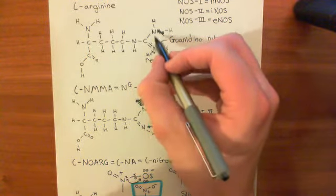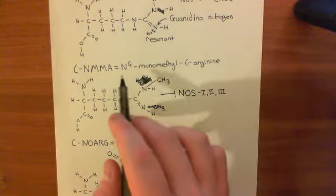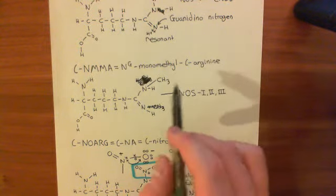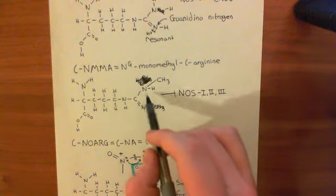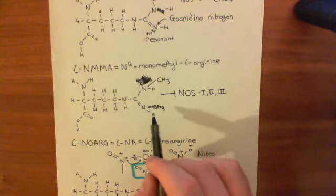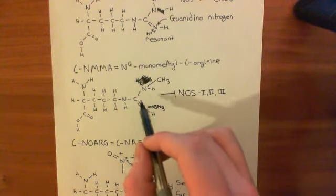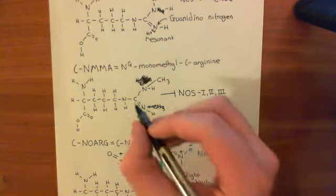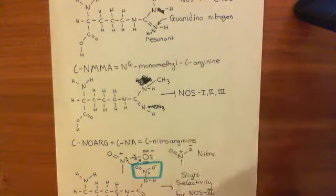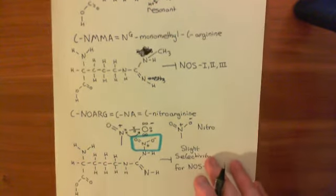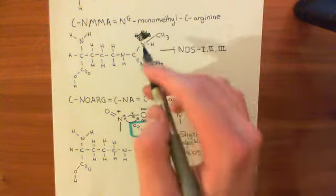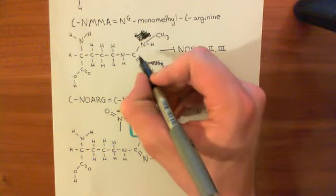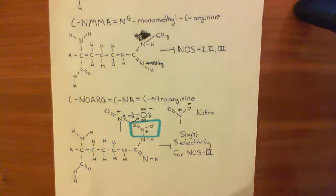So in effect they're both guanidino nitrogens. That's why L-NMMA, which is NG-monomethyl-L-arginine, is often drawn with this methyl group off this nitrogen here. In a sense my structure before wasn't wrong because they'll be flipping between each other. But if you Google it, you will certainly see this structure where the methyl is off the nitrogen that has not currently got the double bond. They'll flip between this one having the double bond and this one having a single bond, and then the other way around.